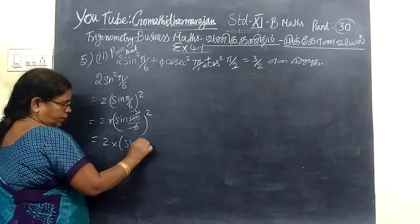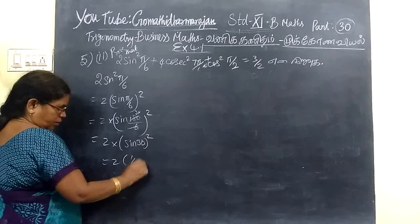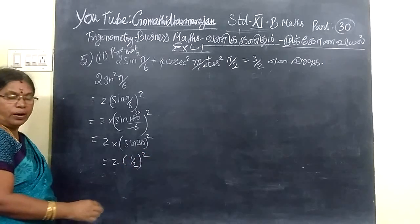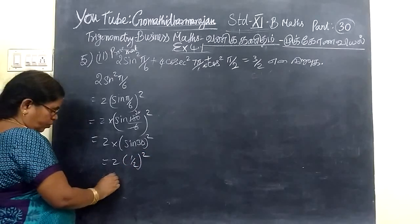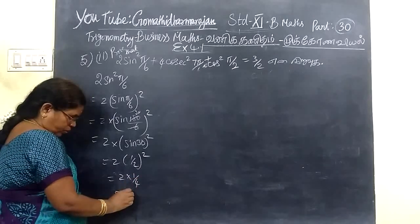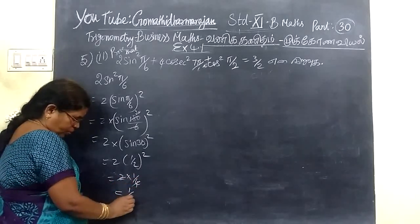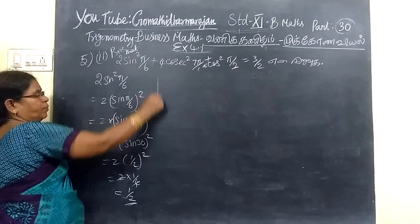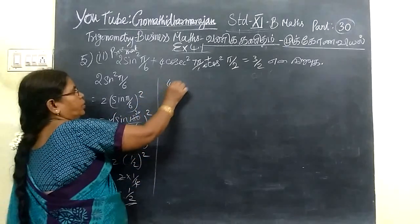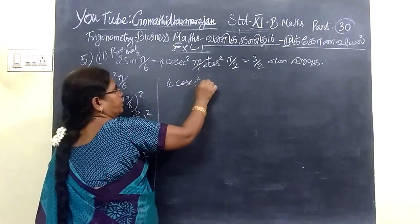So sin(30°) — sin 30 is nothing but 1/2. So 2 into 1 by 2, this is equal to 1 by 2. Then coming to the next part: 4 into sin²(7π/6).